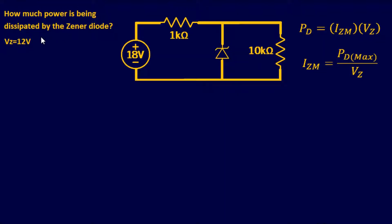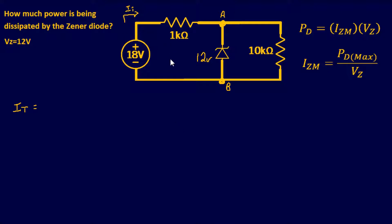Next problem: how much power is being dissipated by the Zener diode, where the Zener diode voltage rating is 12 volts? Since the Zener diode has 12 volts across it, the resistor must absorb the remaining voltage from the source. First, find total current: IT equals (VN minus VZ) over the source resistor, which is (18 volts minus 12 volts) over 1k ohms — that's 6 volts over 1k ohms, giving approximately 6 milliamps.